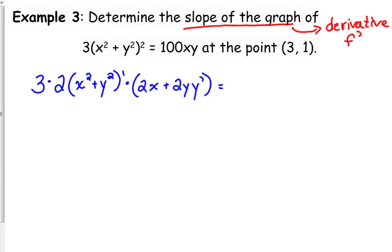The right side is a product rule. There are a couple of ways that you can look at this. First of all, that constant multiple of 100, I would just put that in the front, and then I would look at the product of x times y. So first times the derivative of the second, plus derivative of the first times the second.